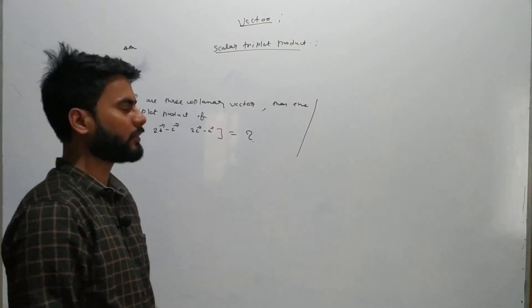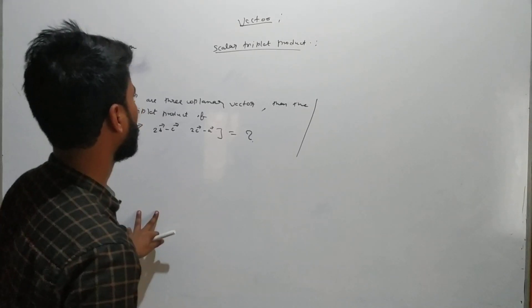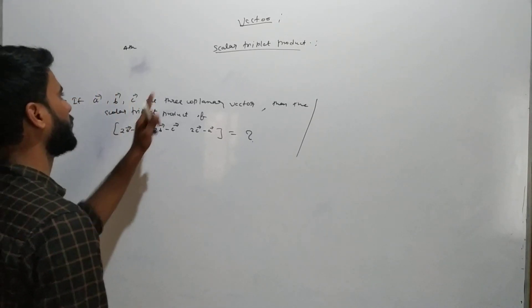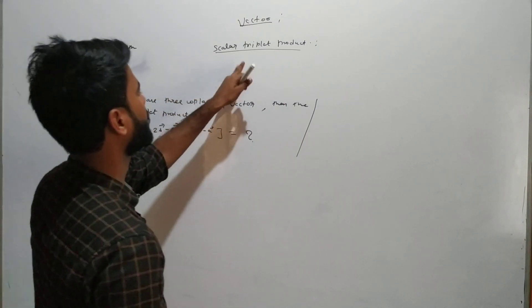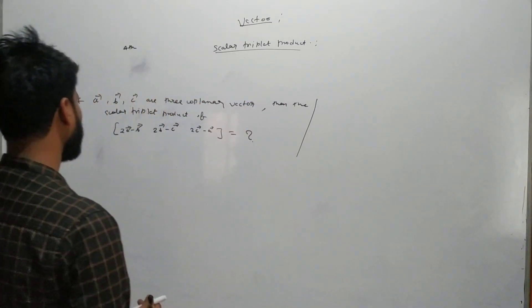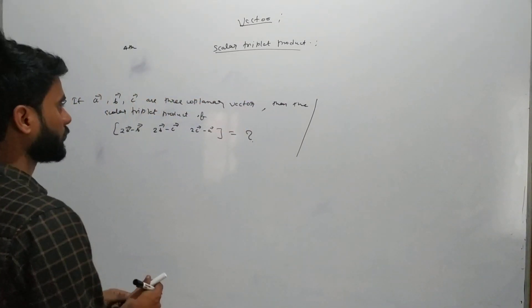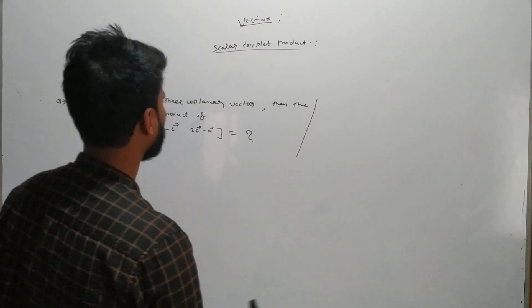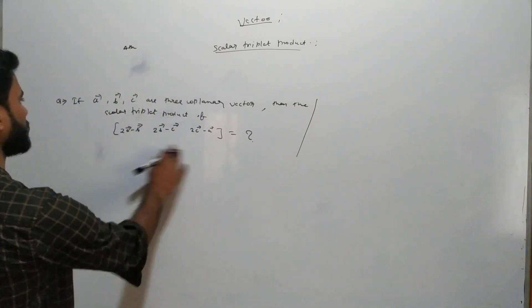Welcome back guys. In the last video we discussed about the different conditions and different properties of the scalar triple product. There is one more property, and based on that property, this question is given.